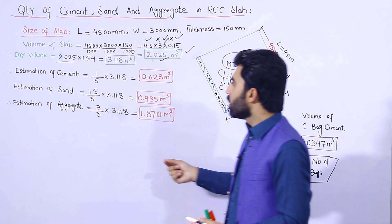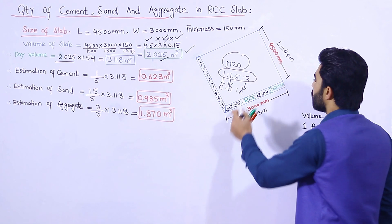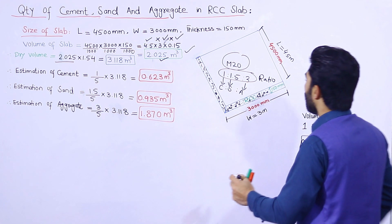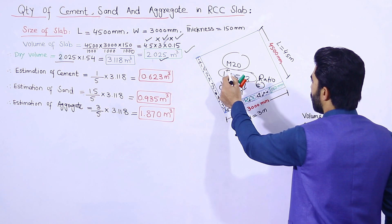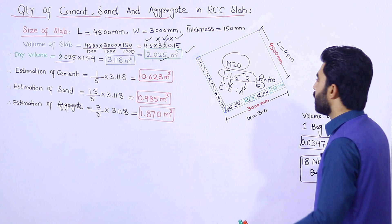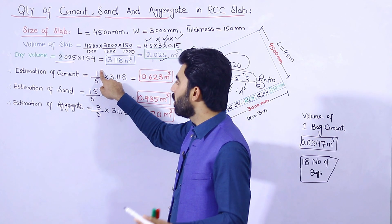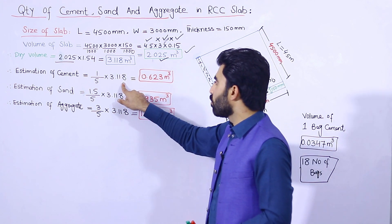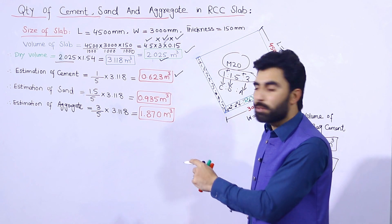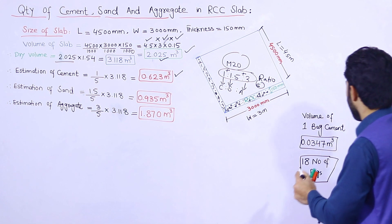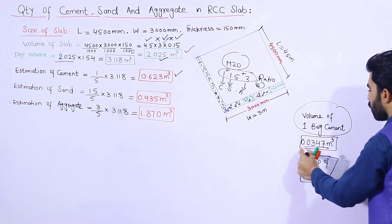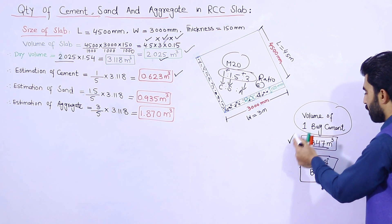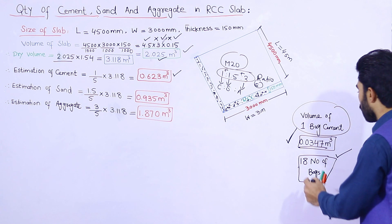For M20 grade concrete, the ratio is 1:1.5:3, and the sum of the ratio is 1 + 1.5 + 3 = 5. Estimation of cement: (1/5) × dry volume = (1/5) × 3.118 = 0.6236 cubic meters. To convert to cement bags, we divide by the volume of one cement bag, which is 0.0347 cubic meters. So the total number of cement bags required = 0.6236 / 0.0347 ≈ 18 bags.